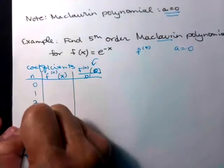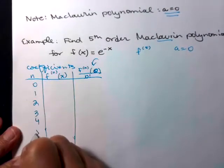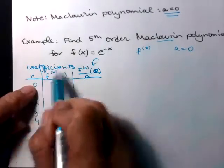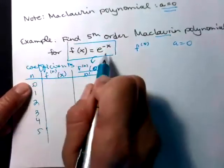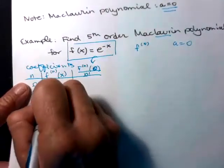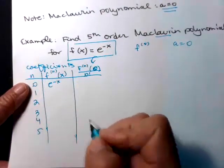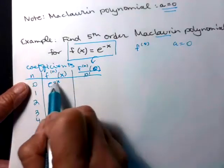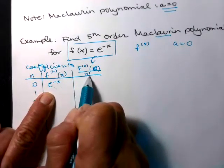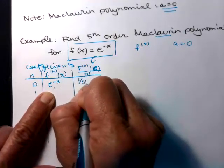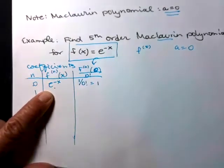We'll go zero, one, two, three, four, five. So here's my f(x). So the zeroth derivative, that's just the function itself. So that'll be e to the negative x. So if I evaluate this function here at zero, that'll be one over, so I have one divided by zero factorial. Okay, so that's a one.